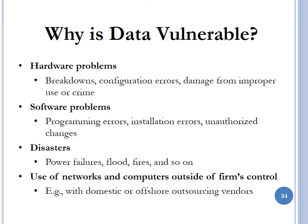Disasters will also impact the vulnerability of data. Power failures while systems are online may cause data corruption. Floods, fires, and other disasters can also impact data quality. The use of networks and computers outside the firm's control further impacts data vulnerability. Data housed by vendors, stored offshore, or in the cloud is outside the company's control and therefore liable to attacks that you have absolutely no control over.